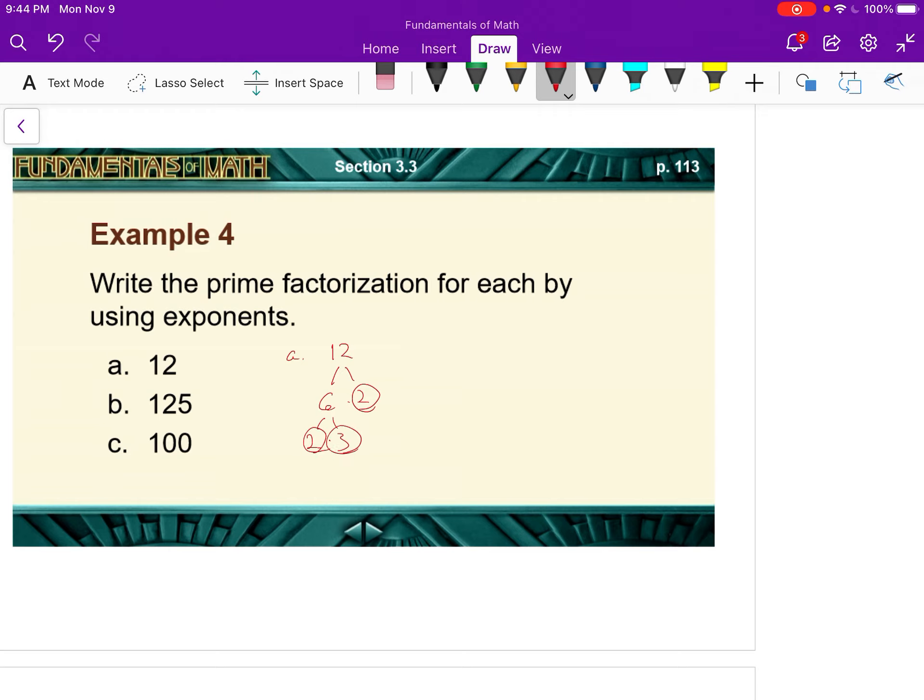So our prime factors, again, we like to put them in order. It's 2 times 2 times 3. But it did ask us to use exponents. So 2 times 2, remember, is 2 squared times 3. So 2 squared times 3 is the prime factorization of 12.